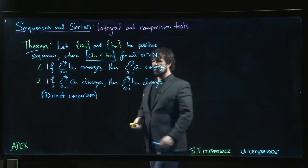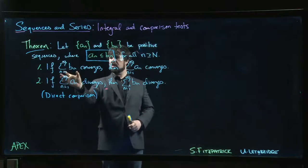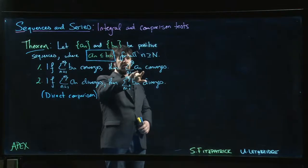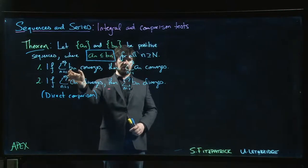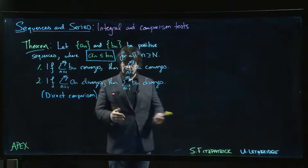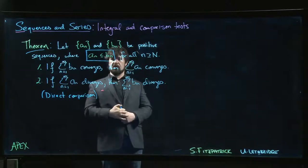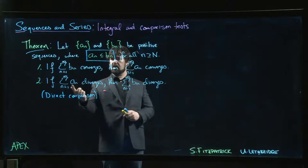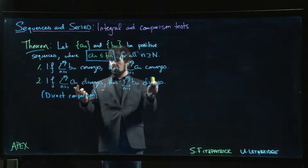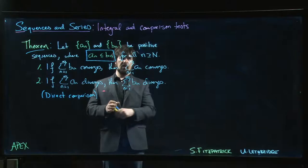If we have one series which we know converges and it's easy to show that the terms in some other series are always less than or equal to the corresponding terms in the convergent series, then this one must automatically converge as well. Conversely, if this series diverges and the other series has terms which are larger, then it has to diverge as well.